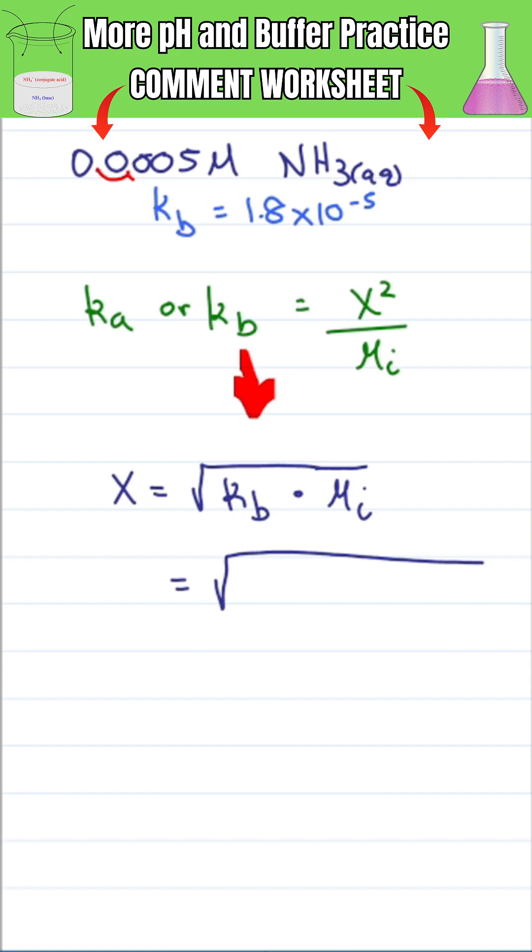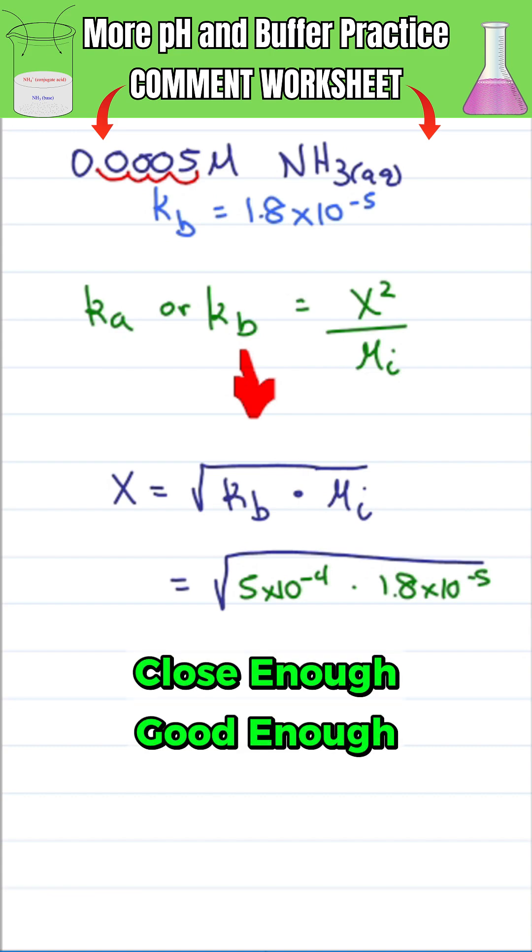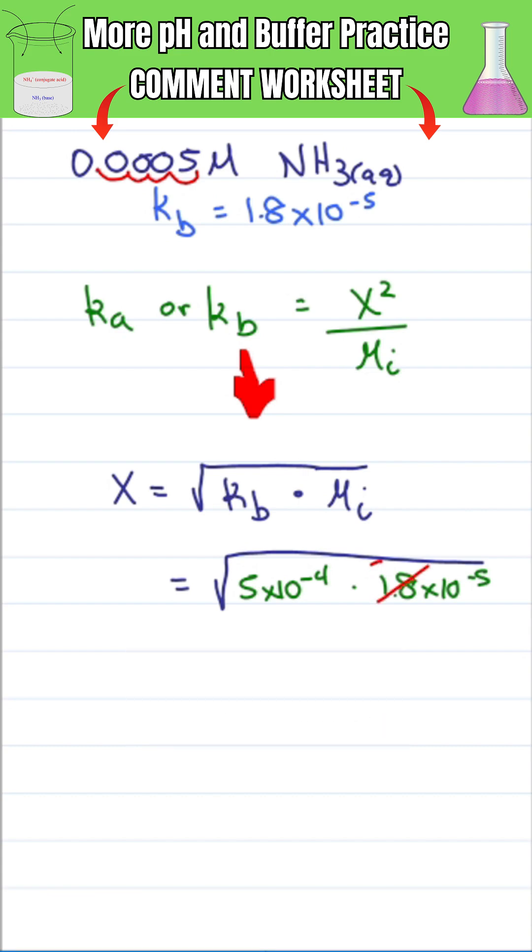This is equal to 5 times 10 to the minus 4 times 1.8 times 10 to the minus 5. Without a calculator, close enough is good enough, so we'll round 1.8 to 2. Multiply the bases: 5 times 2 is 10.